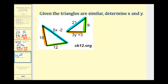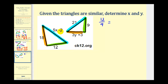In order to set up this proportion, we have to have one known ratio — meaning two corresponding sides whose lengths we know. Looking at the green sides, the side of length twelve corresponds to the side of length nine. So twelve to nine must equal five x minus two to twenty-one, and let's go ahead and solve for x first.